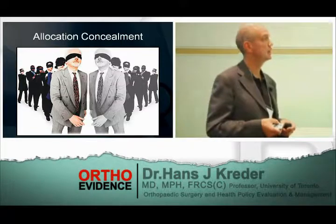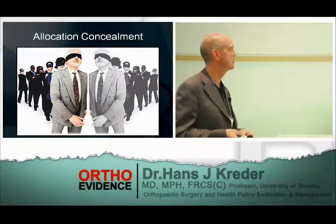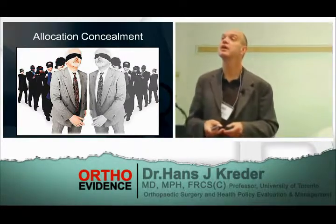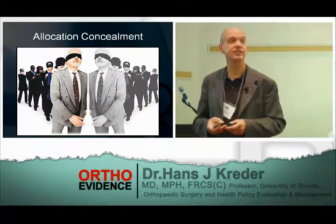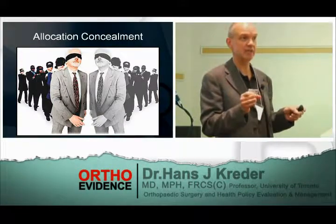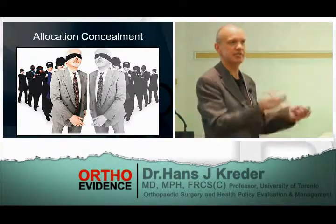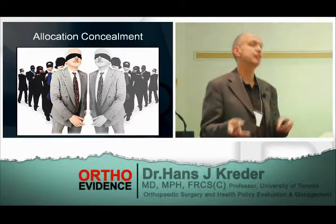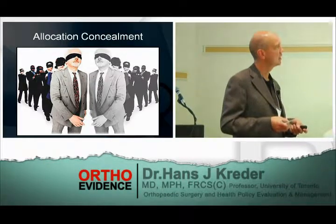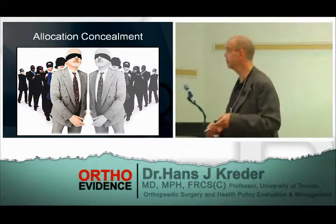Let's say one treatment arm is a pill and the other is an injection. How can you blind the patient? The answer: everybody gets both treatments, but only one of them is active. So everybody gets an injection and a pill. For those randomly assigned to the pill group, the injection is a saline injection and the pill is the active treatment. For those assigned to the injection group, the injection is the active ingredient and the pill is a placebo. That's double dummy — very important when you can't make two treatments look the same, as with an injection versus a pill.